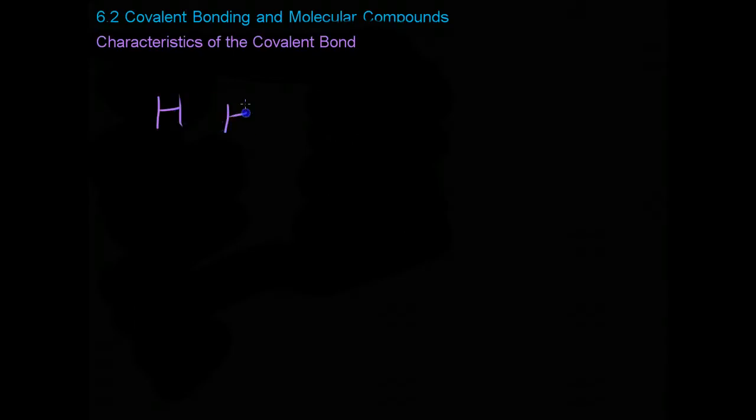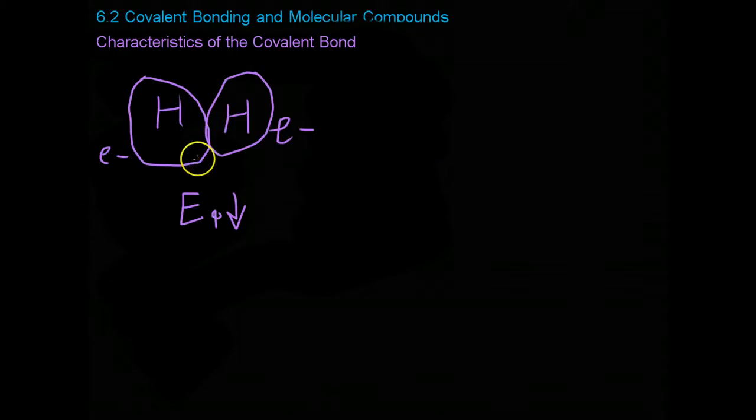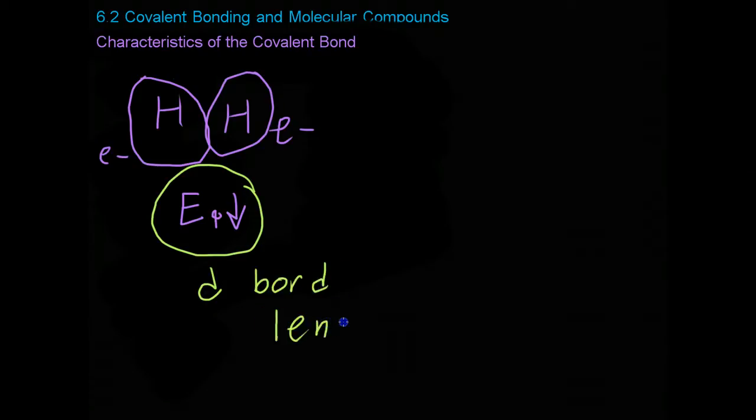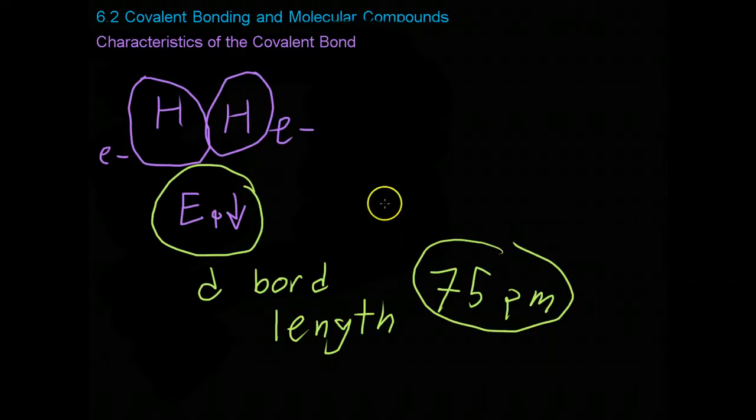This is the point where the attraction between the nuclei of each one and the other one's electron balances out the repulsion between the nuclei and the electrons. This is the lowest potential energy state because if you were to force them even closer together where they were almost on top of one another, the repulsion between the two nuclei would be so great that it would get rid of potential energy and would store it more in electrical energy trying to force the molecule apart. Now this low energy state occurs consistently at a specific distance called the bond length. In the hydrogen, the bond length is about 75 picometers.